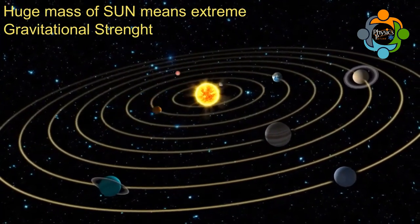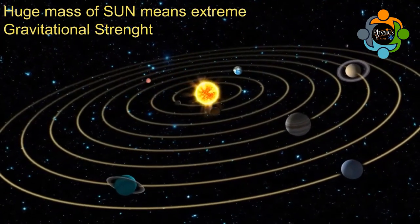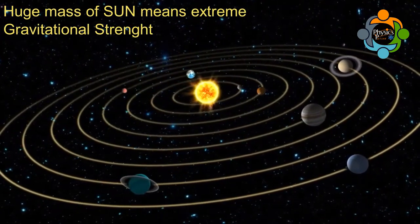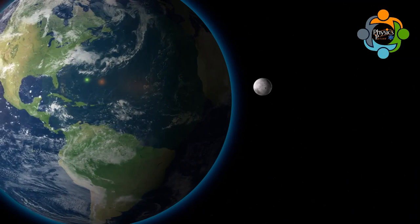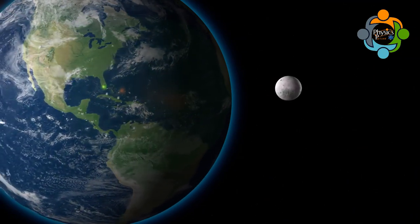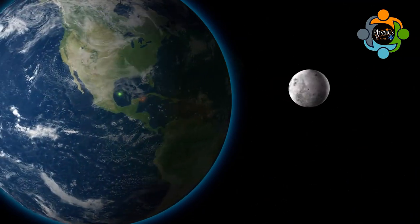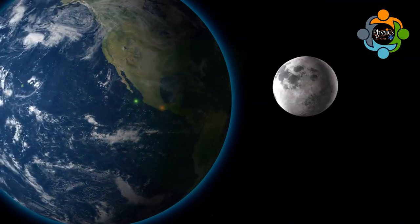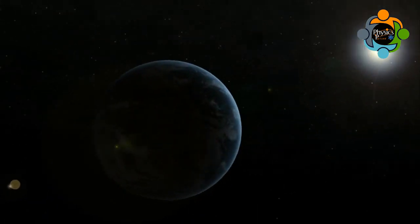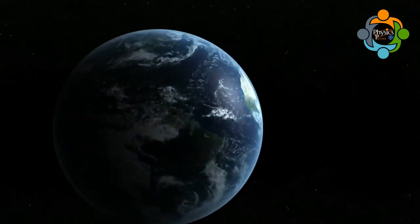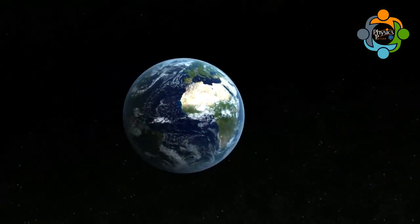This gravity is due to the heavy mass of the sun compared to other planets. Just as the moon orbits the Earth because of the pull of Earth's gravity, the Earth orbits the sun because of the pull of the sun's gravity.